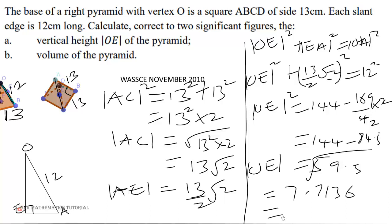To two significant figures, you start counting from the first non-zero number, which is one, two. So the next one is one, so we have 7.7 centimeters to two significant figures.